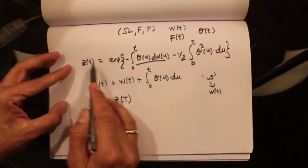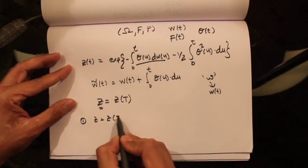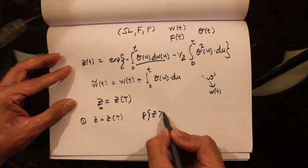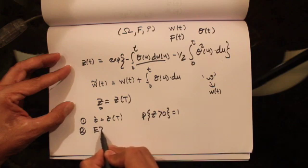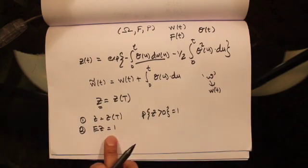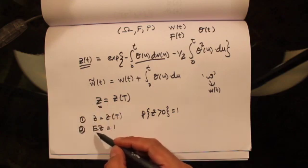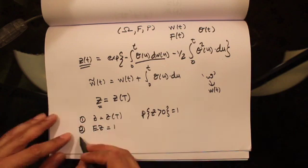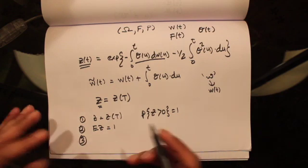Because Z(t) is an exponential function, it is always going to be positive, so the probability that Z is greater than 0 equals 1. Secondly, the expected value of Z under the actual probability measure was equal to 1. We showed this by showing that this process is a martingale under the actual probability measure, which led to the result that E[Z] equals 1.